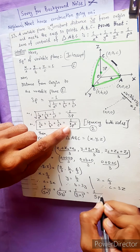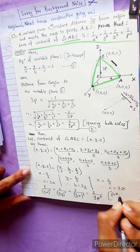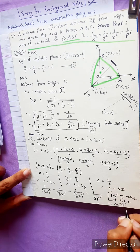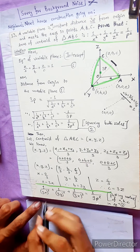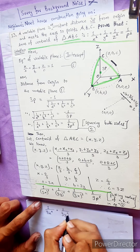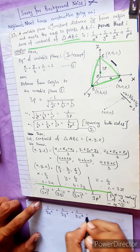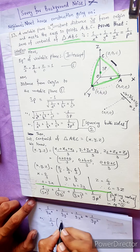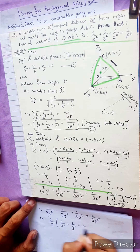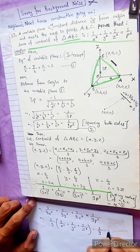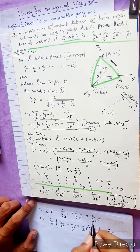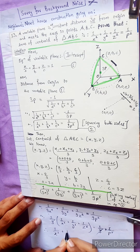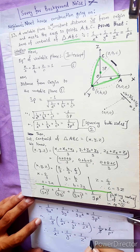Putting the values a = 3X, b = 3Y, c = 3Z into equation 2: 1/(3X)² + 1/(3Y)² + 1/(3Z)² = 1/(9p²). This gives 1/(9x²) + 1/(9y²) + 1/(9z²) = 1/(9p²). Taking out the common factor 1/9: 1/x² + 1/y² + 1/z² = 1/p².